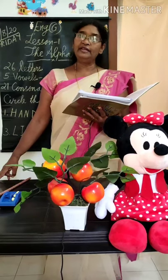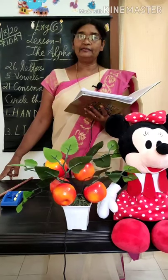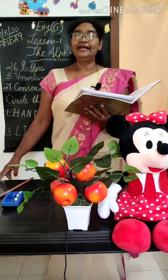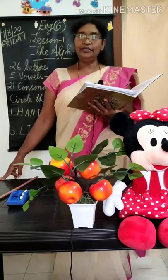Do you know how many vowels are there in the English alphabet? Very good. There are 5 vowels in the English alphabet. You already studied in UKG, no? They are A, E, I, O, U.